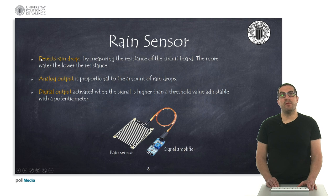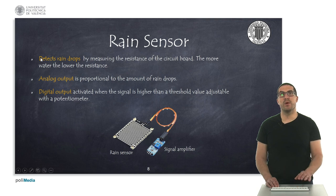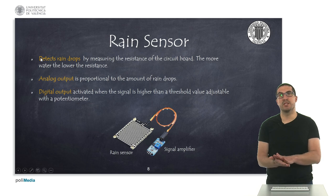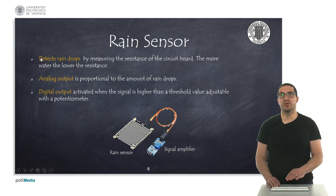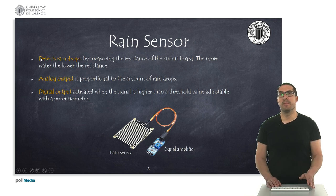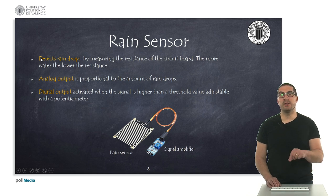We also have a rain sensor, which is very similar to the previous one. The difference is that we have a panel which basically provides some kind of short-circuit resistance, depending on the amount of rain received. It also provides both an analog output and a digital output interface: the analog output is proportional to the amount of raindrops detected, and the digital output can be activated or deactivated depending on the potentiometer value.